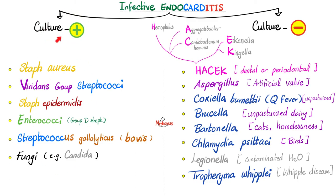All of these organisms will show up on blood culture. However, some organisms are very difficult to culture by ordinary media — these will be culture-negative infective endocarditis, such as the infamous HACEK group: Haemophilus, Aggregatibacter, Cardiobacterium hominis, Eikenella, and Kingella. Then there's Aspergillus, as well as Coxiella burnetii, Brucella, Bartonella, Chlamydia psittaci, Legionella, and Tropheryma whipplei.